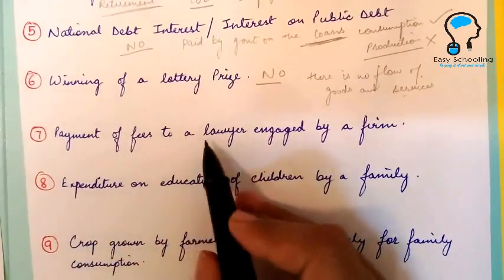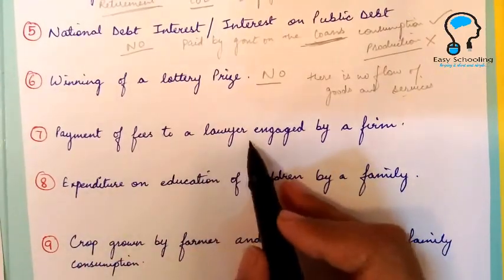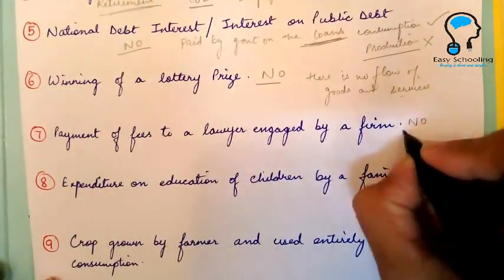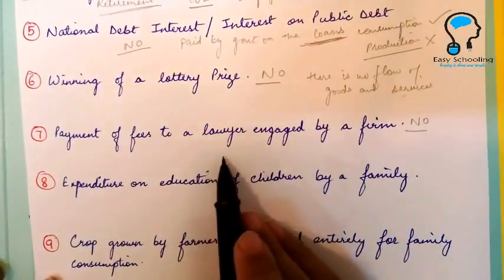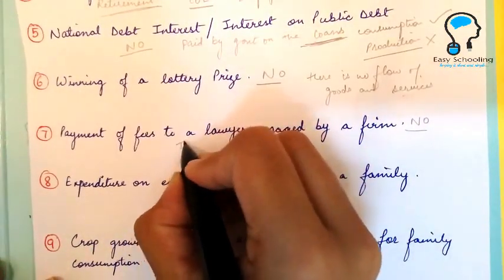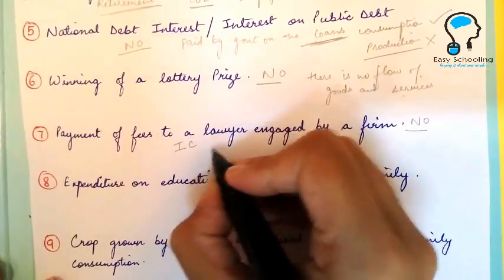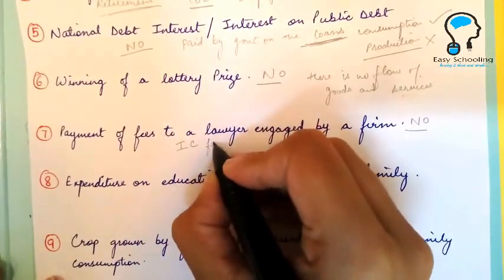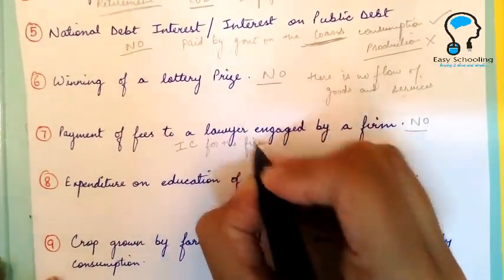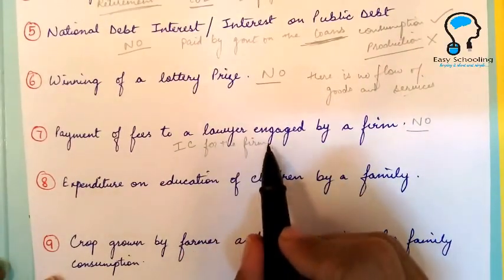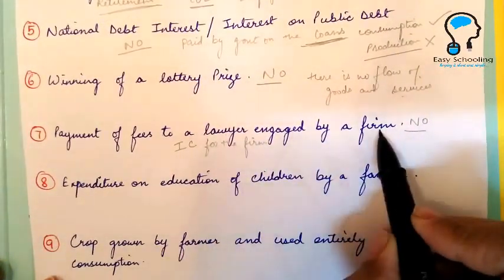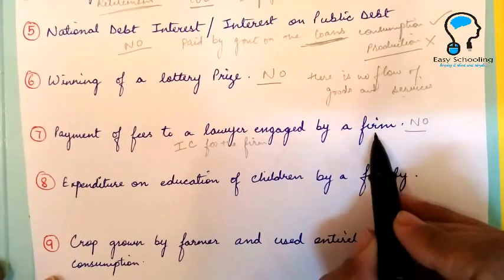Payment of fees to a lawyer engaged by a firm — no, this will not be included because this is an intermediate cost for the firm. It involves the purchase of the service of a lawyer by the firm.